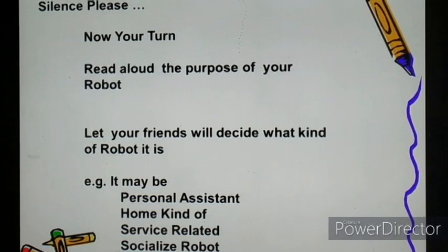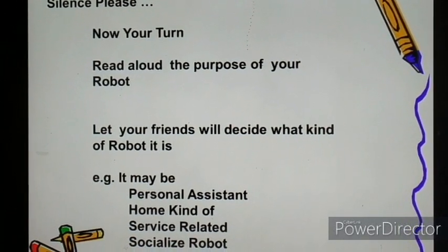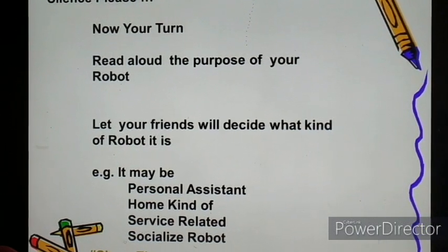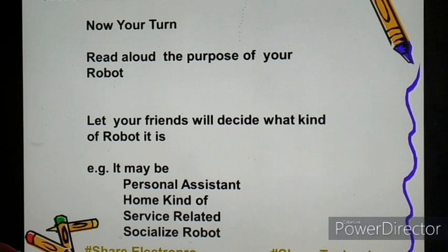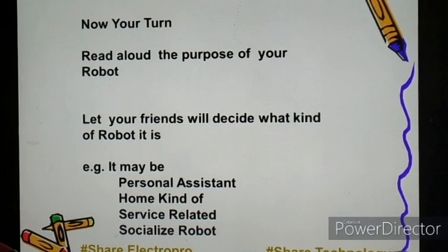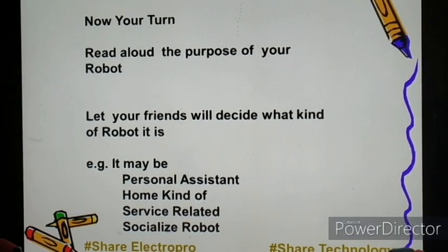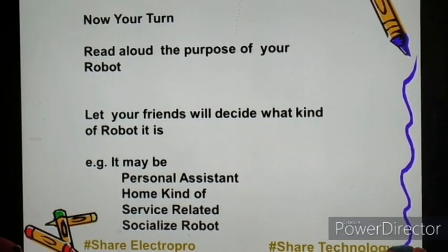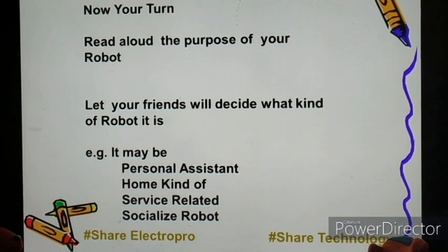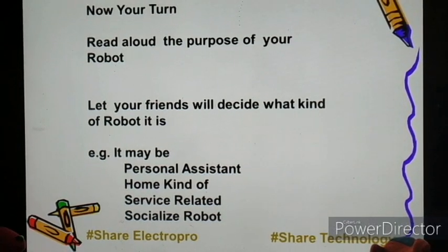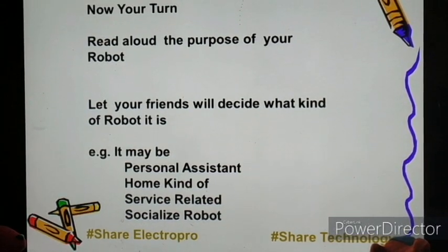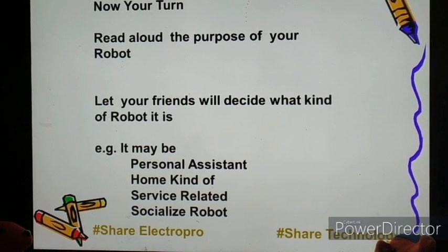Now, as you have all completed, let's see what does your robot do or which type of robot is it. If your robot works only for home purposes, it can be known as a home kind of robot. If the robot works for you personally, it can be called a personal assistant robot. If my robot is designed to do all service-related work, I call it a service robot. And if my robot greets guests and socializes with them, it can be called a socialized robot.